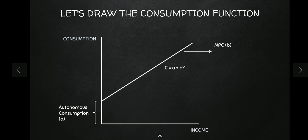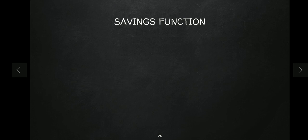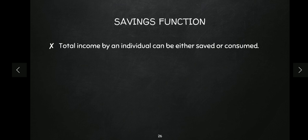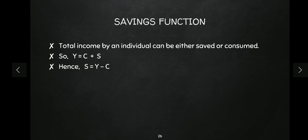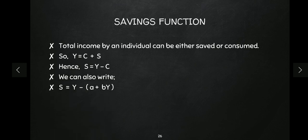Now, from the consumption function, a related concept is the savings function. As I told you, every person either consumes or saves a portion of their income. Just as we have a consumption function, we can derive a savings function. Total income is nothing but consumption plus savings, so savings equals income minus consumption. Using this, we can derive the savings function: S = Y − (a + bY), which gives S = −a + (1−b)Y.